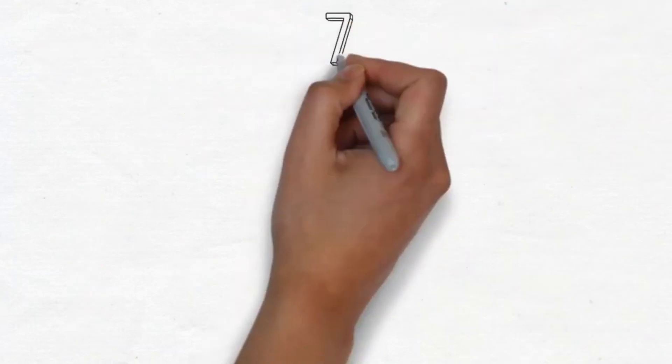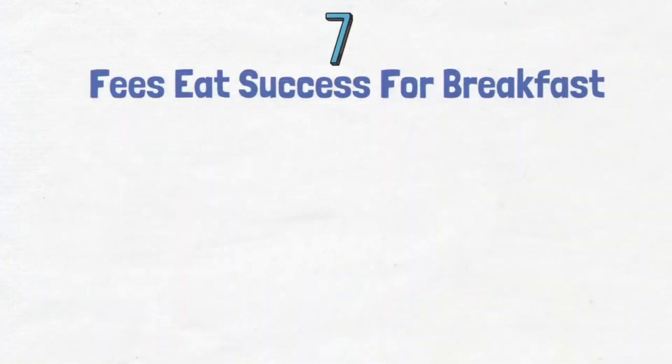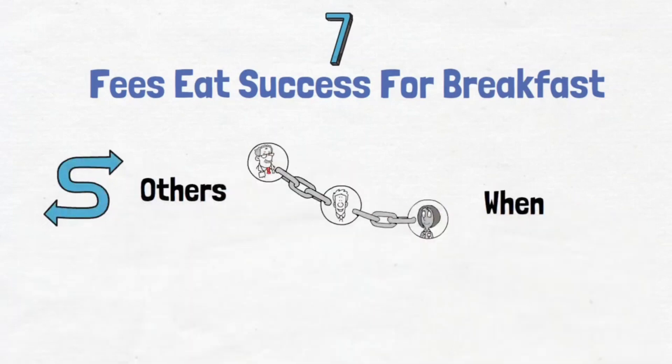7. Fees eat success for breakfast. You subsidize someone else's journey to prosperity every time you pay a charge to manage your money or service a debt.